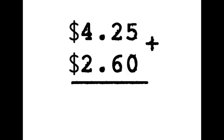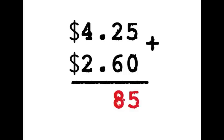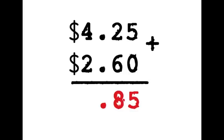Five plus zero — what do you think the answer would be? Pretty easy: five. Two plus six: eight. Where do we put the decimal? Right there. And four plus two equals six. Six dollars and eighty-five cents.